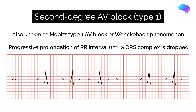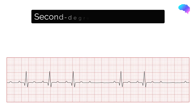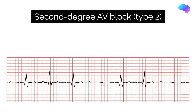Second degree AV block type 1 is usually benign and rarely causes hemodynamic compromise. Usually no intervention is required if the patient is asymptomatic. Second degree AV block type 2 is also known as Mobitz type 2 AV block.